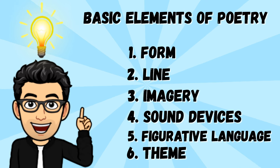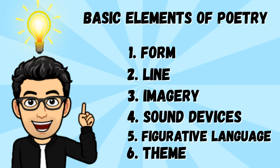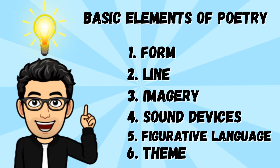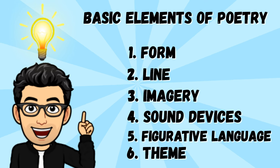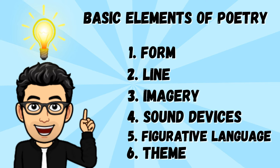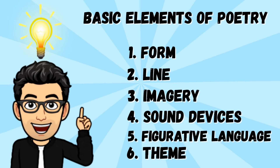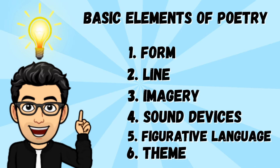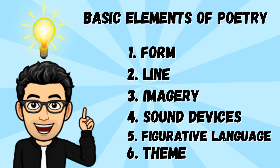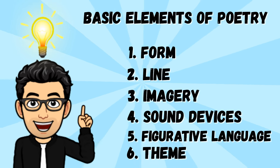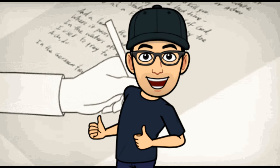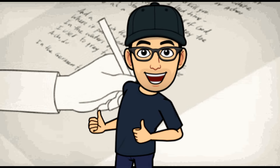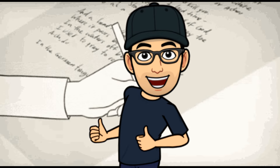In this introduction, we will explore the fundamental components that make up the poem, including its form, line, imagery, sound devices, figurative language, and theme. Each of these elements plays a crucial role in shaping the poem's overall impact and meaning. By learning about these aspects, you can begin to uncover the nuances of a poem — from its rhythm and sound to the deeper themes and emotions it seeks to convey. Let's delve into the world of poetry and discover the essential elements that poets use to bring their words to life.